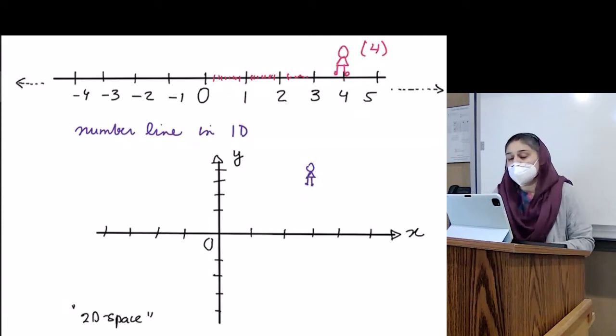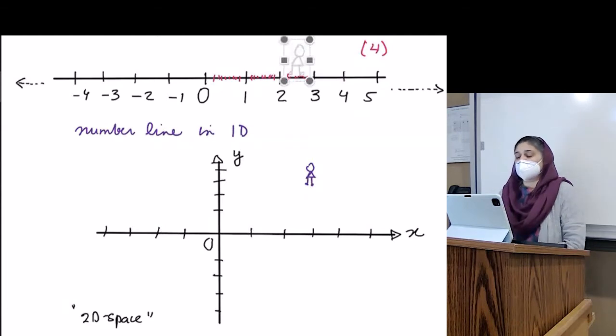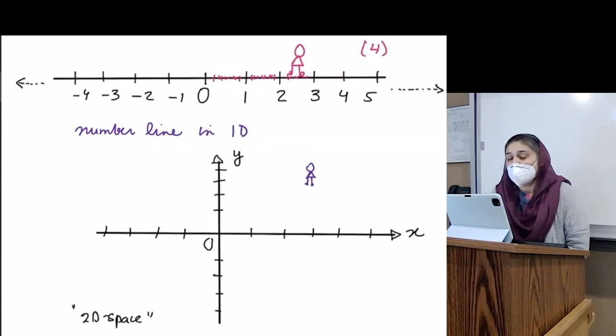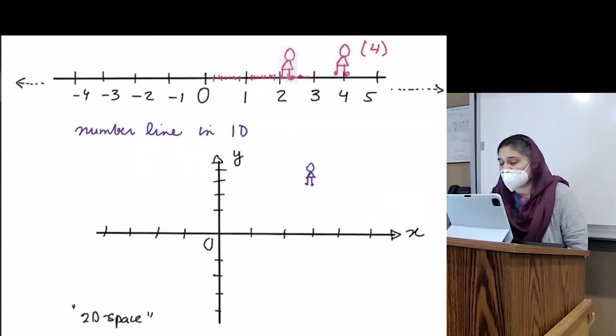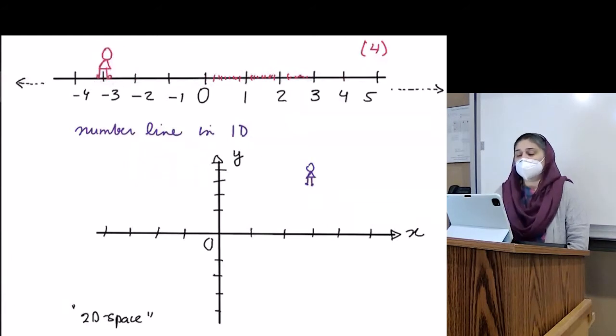What if I moved this person to go here? Where is this person now? At 2.5? What if I made this person go here? Negative three, right? So this person can move on the number line.